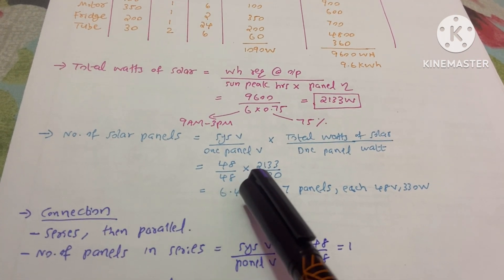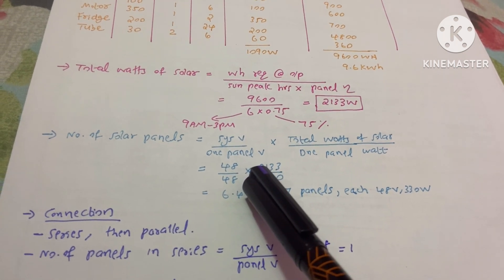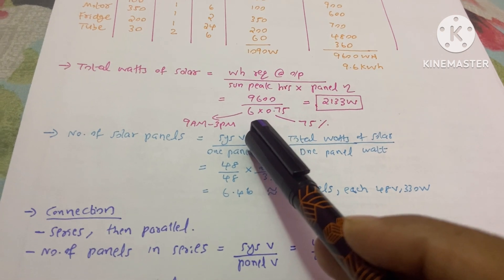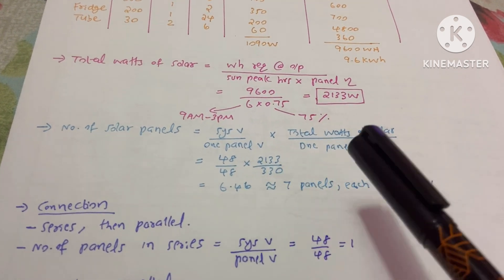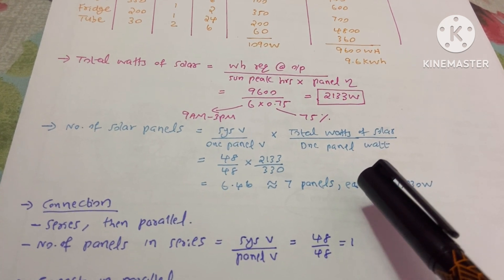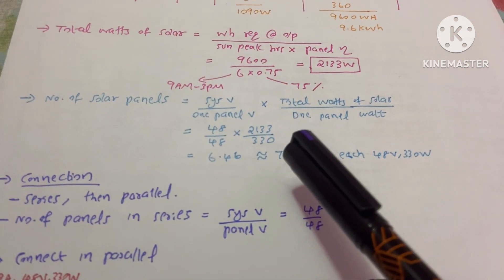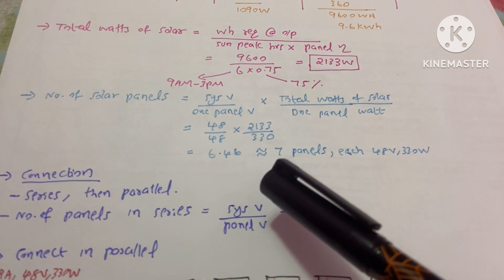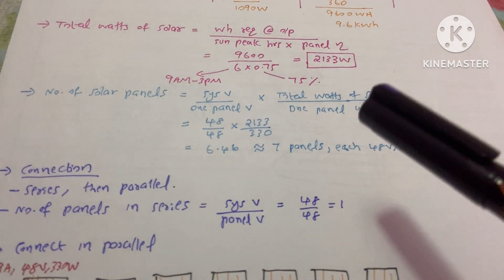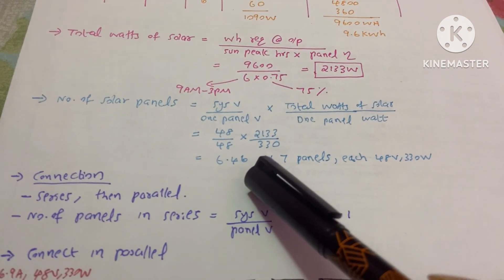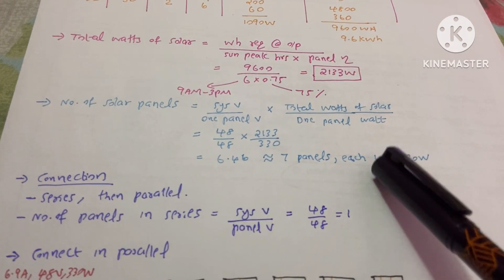I have taken one panel voltage as 48V, considering the whole system voltage is 48V. Total watts of solar is 2133W, and one panel watt is 330W — panels are available in 250W, 300W, 330W etc. Using higher watt panels means fewer panels needed, which helps when roof space is limited. The result is 6.46, so approximately seven panels, each 48V and 330W.